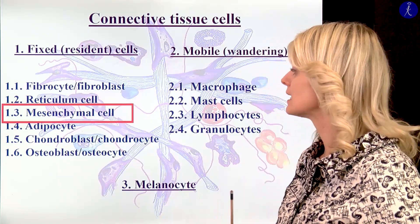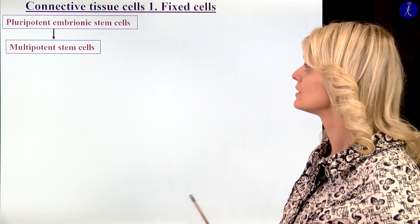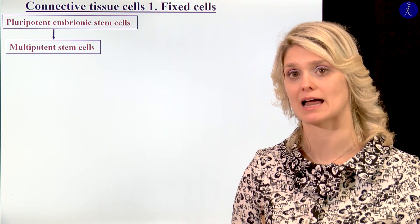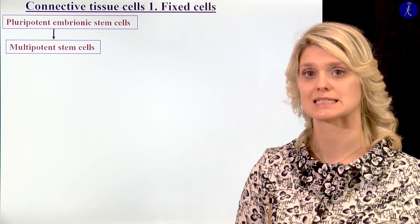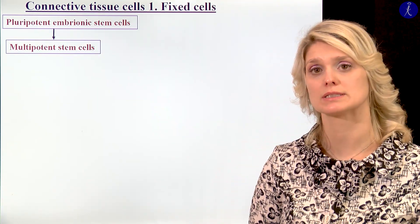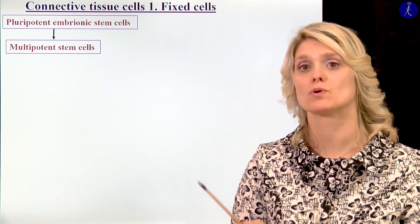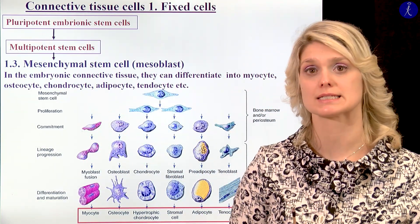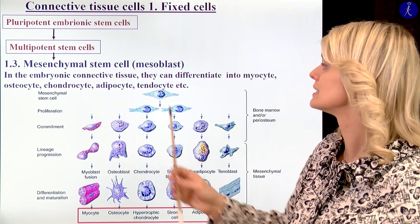The third cell here is the mesenchymal cell. We know that we have a lot of pluripotent embryonic stem cells during development. From these pluripotent cells, a lot of different cell types can develop, and from this we have different multipotent cells. The multipotent cells have special characteristics. So from the multipotent stem cells, we can talk about mesenchymal stem cells, from which can develop the embryonic connective tissue.